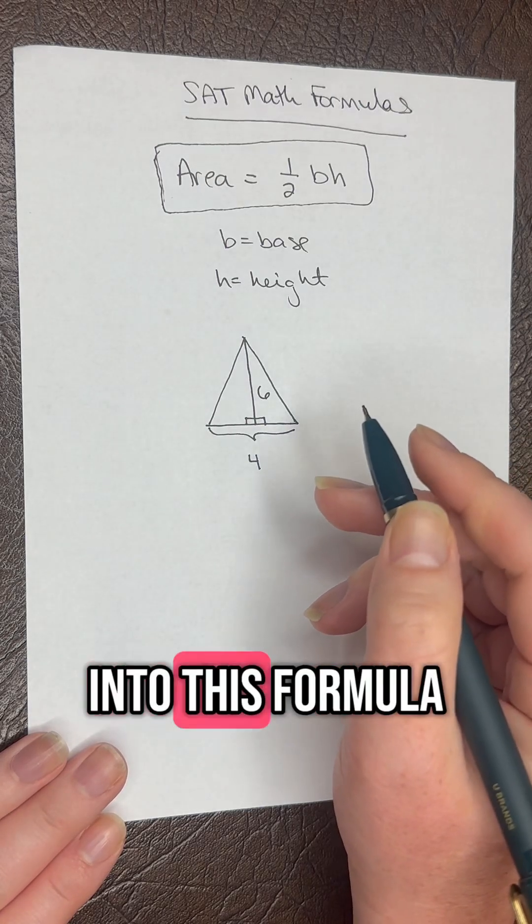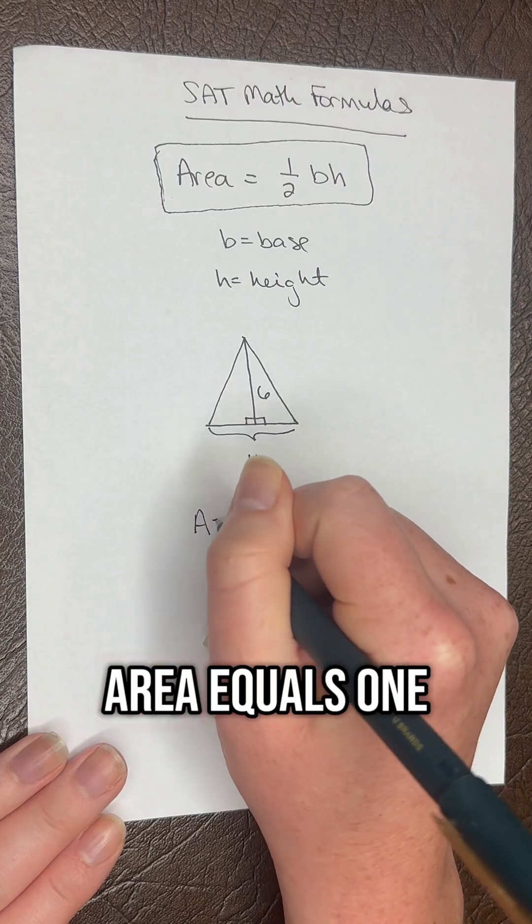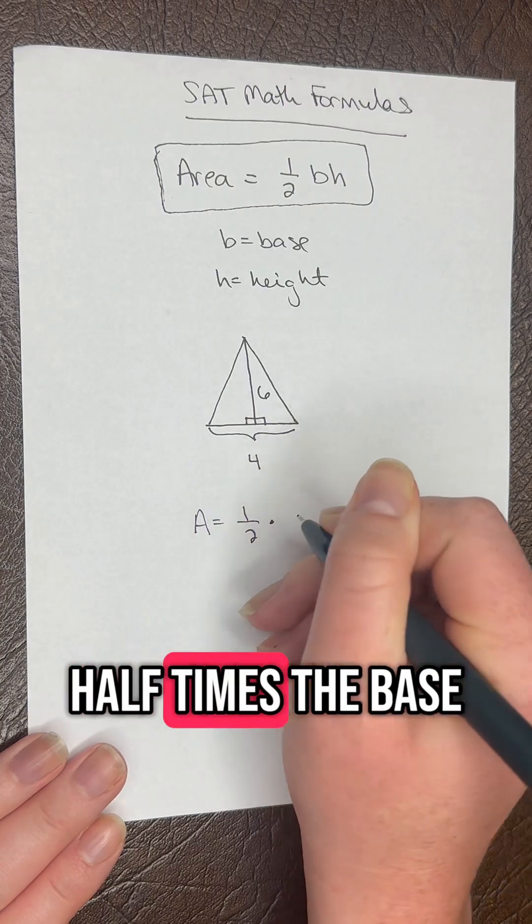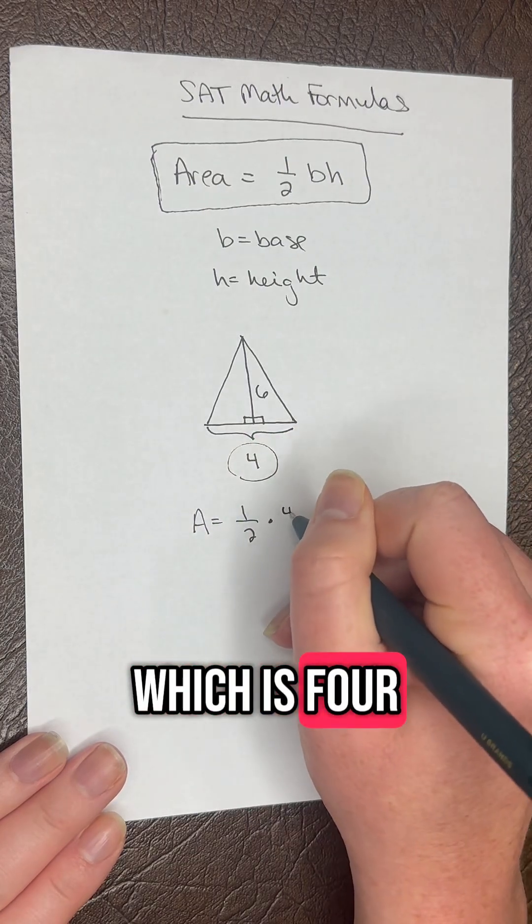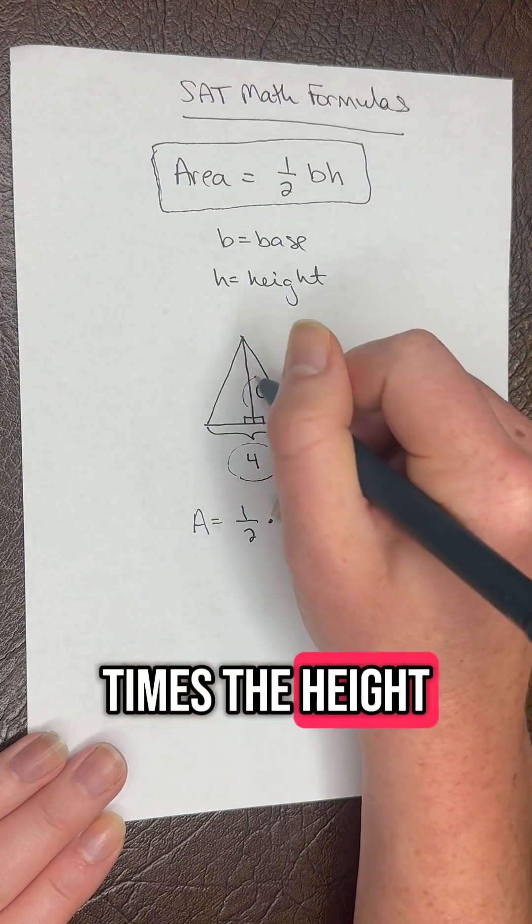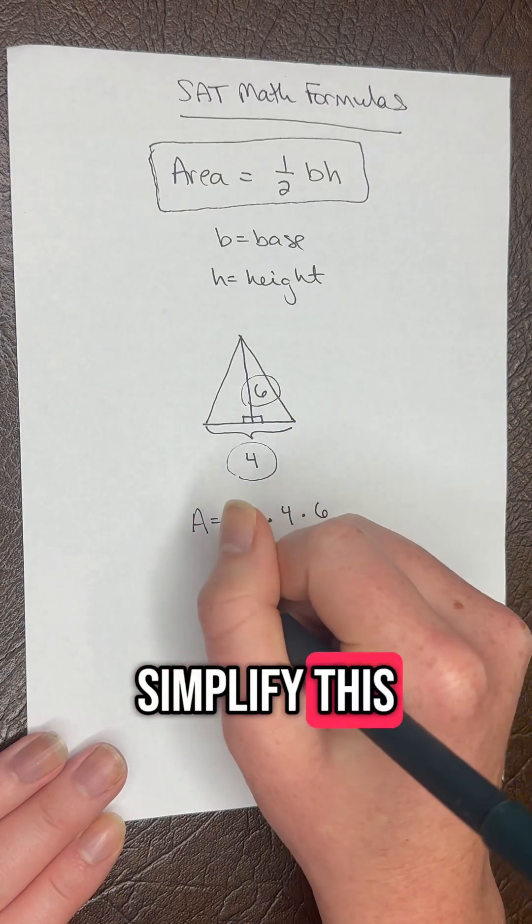If we plug into this formula, we would have area equals one half times the base, which is 4, times the height, which is 6.